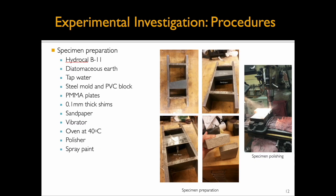For specimen preparation, a PVC block was placed inside a steel mold to serve as a cast for the first half of the specimen, and the pre-existing flaws were created using steel shims. To produce a rough interface, sandpaper was attached to the PVC block; to produce a smooth interface, no sandpaper was attached. To prepare the gypsum mixture, diatomaceous earth, water, and Hydrocal V11 were used, then this mixture was poured into the steel mold and vibrated for about 4 minutes. After letting it sit for 24 hours, the block and steel shims were removed, and then a new mixture of gypsum was poured against the first half, also using steel shims to create the other pre-existing flaw.